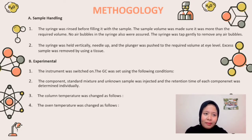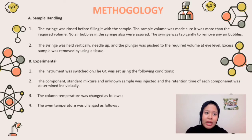Part B: Experimental. Step 1: The instrument was switched on. The GC was set using the following conditions: 70°C initial and final column temperature, 180°C injection and detector temperature. Step 2: The standard mixture and unknown sample were injected, and the retention time of each component was determined and identified individually.